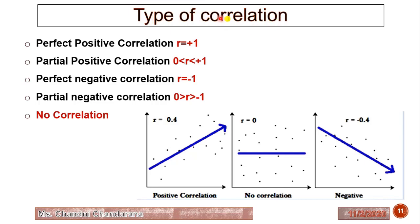There are generally four types of correlation. First, perfect positive correlation where r equals plus 1. Second, partial positive correlation where r is between 0 and 1. Third, perfect negative correlation where r equals negative 1. Fourth, partial negative correlation where r is between negative values. And finally, no correlation where r equals zero.